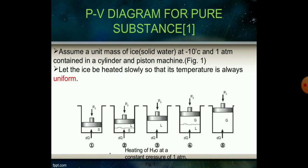Now we can consider the P-V diagram for pure substance. Assume a unit mass of ice, that is solid water, at minus 10 degrees Celsius and one atmosphere contained in a cylinder and piston machine. Let the ice be heated slowly so that its temperature is always uniform.